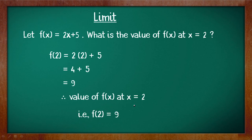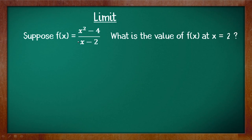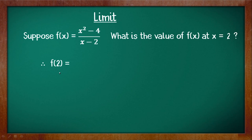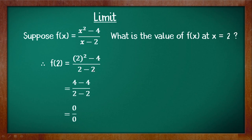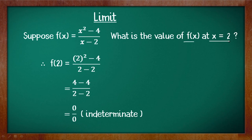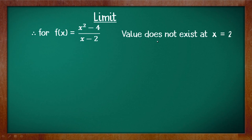Now let us do the same thing with the function f(x) = (x² - 4) / (x - 2). We need to find the value of f(x) at x = 2. Replacing x with 2: f(2) = (4 - 4) / (2 - 2) = 0/0, which is indeterminate — undefined. So the value does not exist at x = 2.